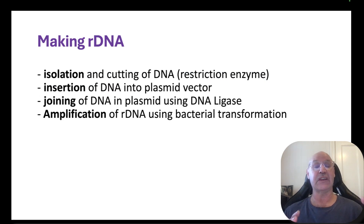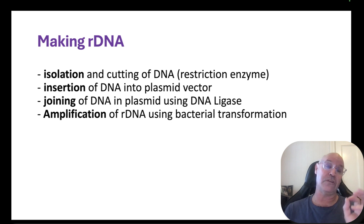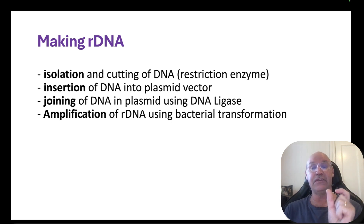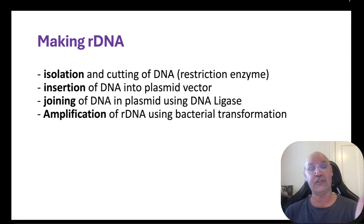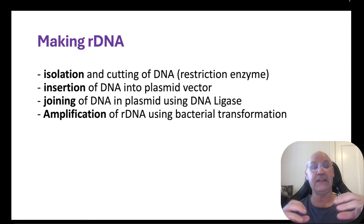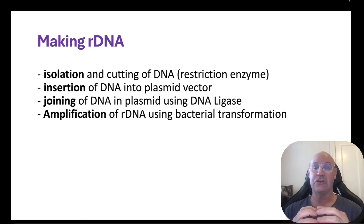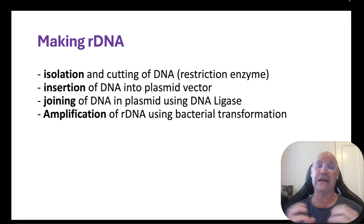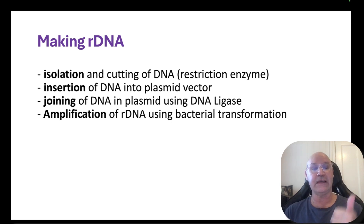Here's a summary of what we're actually doing. First, we need to isolate and cut the DNA of the gene of interest, and we use a restriction enzyme to do that. Next, we insert the DNA into a vector — the vector being a plasmid. Then we join that DNA in the plasmid using DNA ligase enzyme. Finally, we amplify the amount of recombinant DNA we've got using bacterial transformation. The easy way to remember is: isolation, insertion, joining, amplification — I-I-J-A.